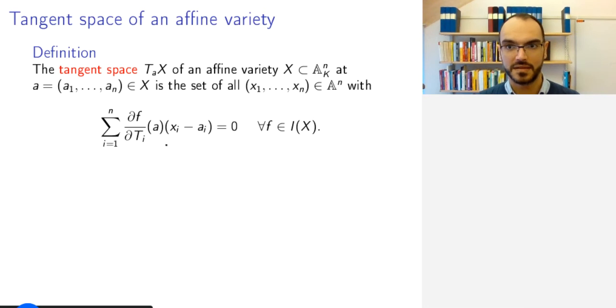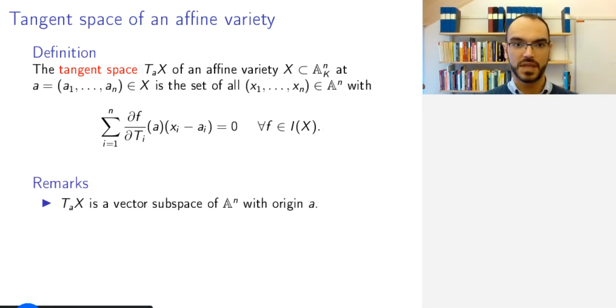This is exactly in your Euclidean intuitive picture, the scalar product between the gradient and the sort of distance vector to the point x from the point A. And we require this for all functions in the vanishing ideal. A few remarks, and perhaps you should pause and draw a picture and think about this definition.